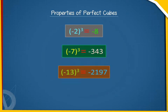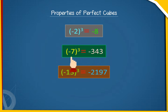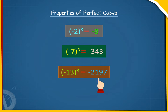Property 4: The cube of a negative integer is negative. For example, (-2)³ = -8, (-7)³ = -343, (-13)³ = -2197.